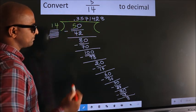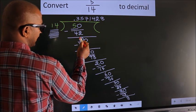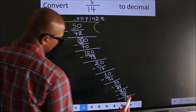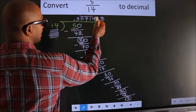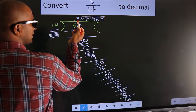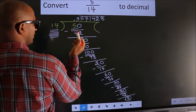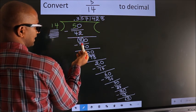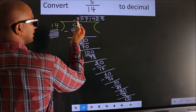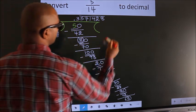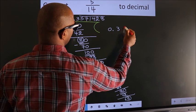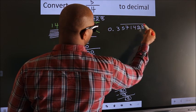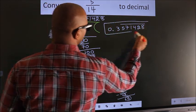Now observe — we got 8 here earlier, and we got 8 again. That means we get a bar on these repeating numbers. We don't get a bar on 3 because 3 did not repeat from the first step — the repetition started after the first step. Therefore, our answer is 0.3571428 with a bar on the repeating digits.